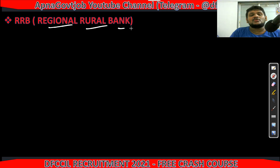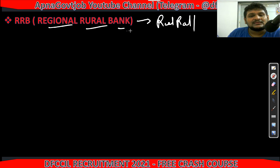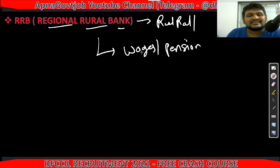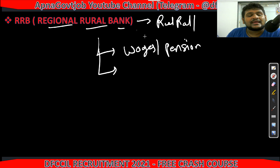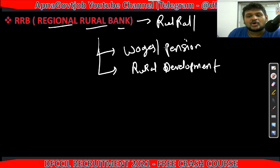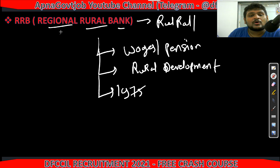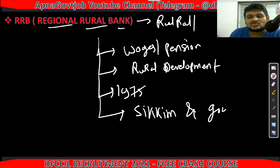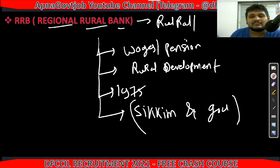Next are RRBs — Regional Rural Banks. These banks operate basically in rural areas and villages. Their primary role is to give wages, pension to old people, wages to MGNREGA workers, and to provide money for small businesses — basically for rural development. RRBs were formed in 1975 and are now present in every state of India except Sikkim and Goa. So remember: no RRBs in Sikkim and Goa — this is a very important question.